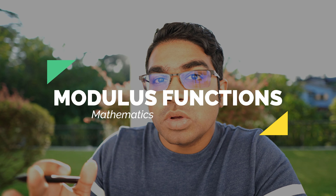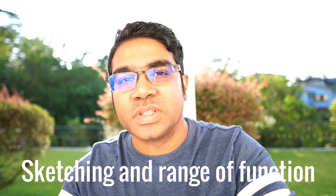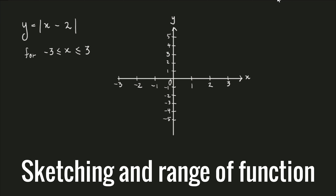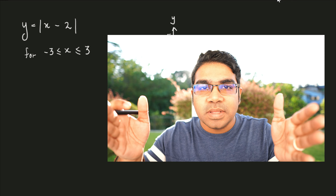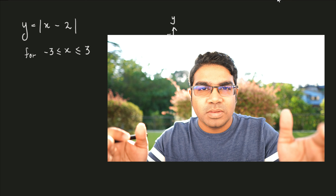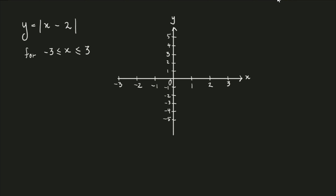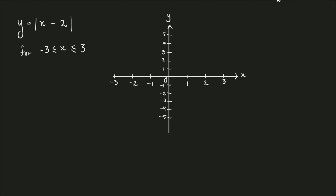In this video, we'll be looking at modulus functions — how to draw graphs of modulus functions and how to determine their range. Let's look at the first one: Y equals modulus of X minus 2. The modulus means that whatever value is inside the modulus sign will always be positive. Even if the calculation works out to be negative, the modulus sign changes it to positive. When drawing a graph of a modulus function, we draw the function without the modulus first.